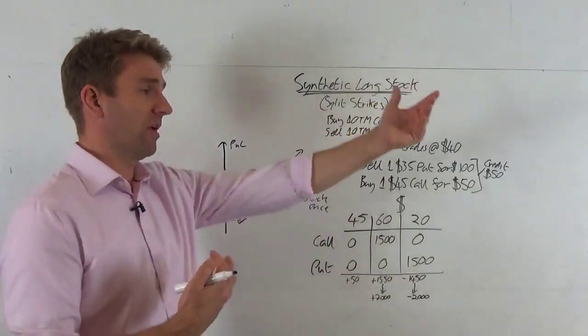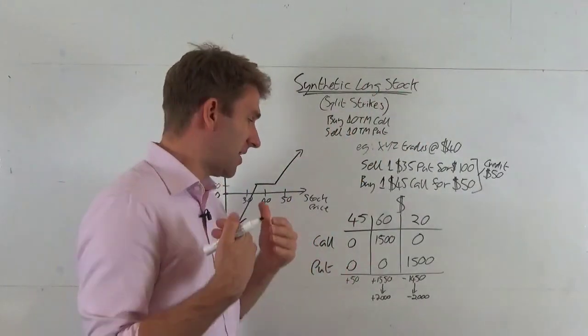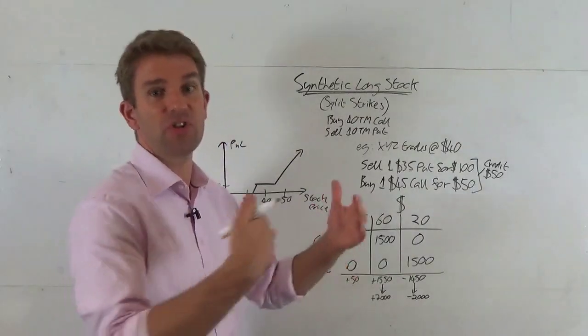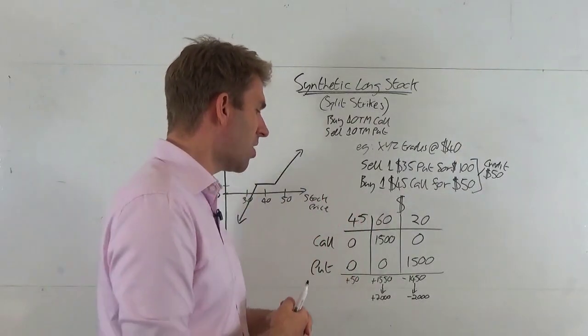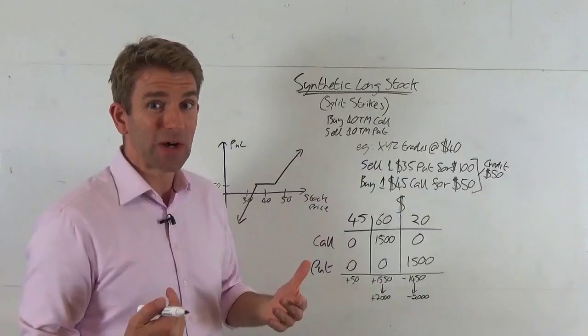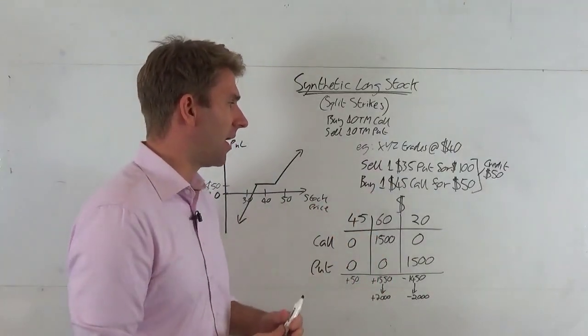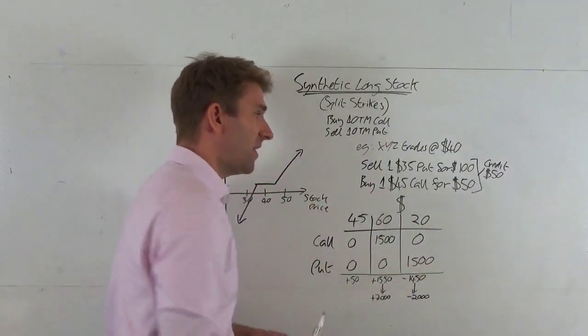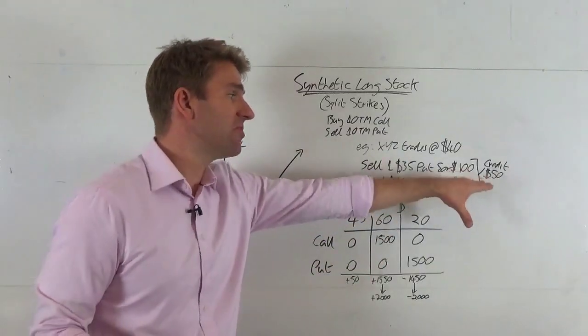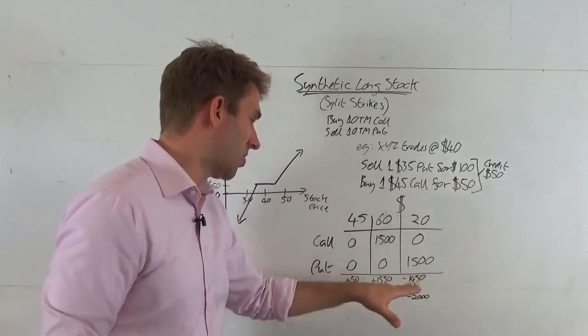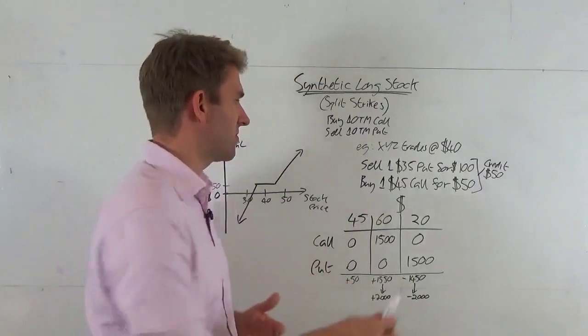The put is going to have lots of value right, because it's only at 20 and we've got a 35 put. It's got 15 dollars worth of value times by the 100 shares, 1500 dollars. Unfortunately we'd sold that one so we're the ones on the hook for that 1500 bucks. But within this minus 1500 we actually received the 50 credit so the loss is 1450.